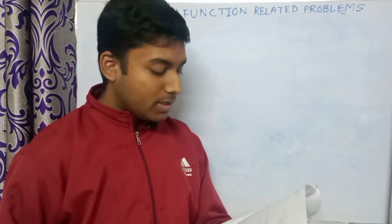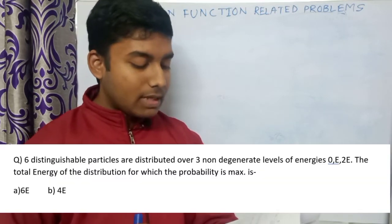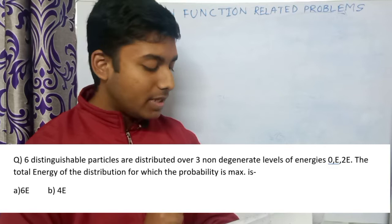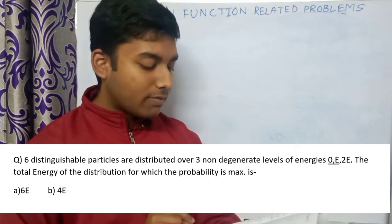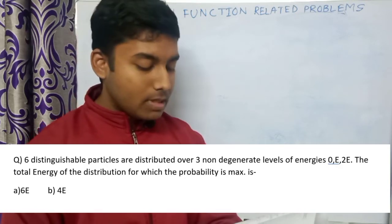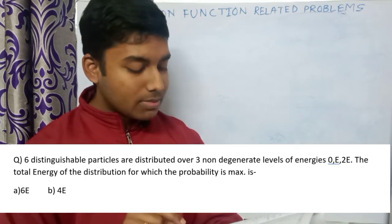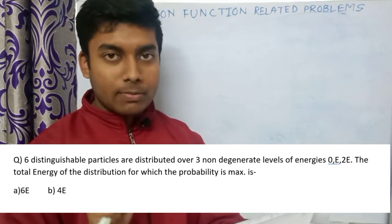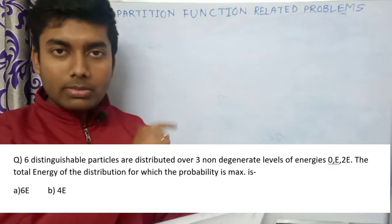The problem is very interesting: six distinguishable particles are distributed over three non-degenerate levels of energies 0, ε, and 2ε. We need to find the total energy of the distribution for which the probability is maximum.